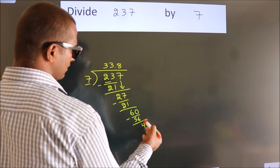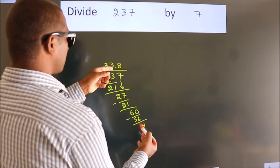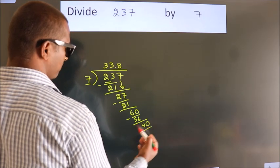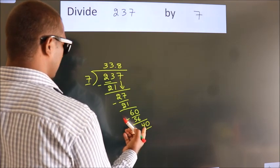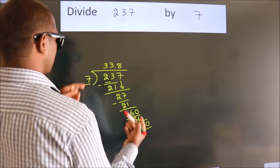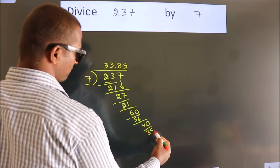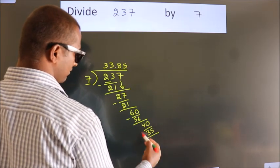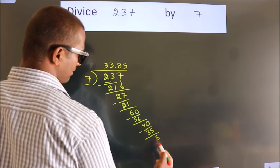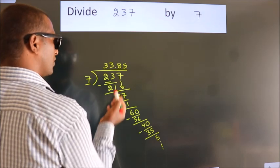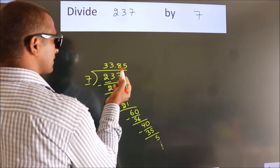After this we already have the decimal, so directly take 0. So 40. A number close to 40 in the 7 table is 7 fives, 35. Now we subtract. We get 5. And the division continues. It is enough if we do up to 2 decimal places.